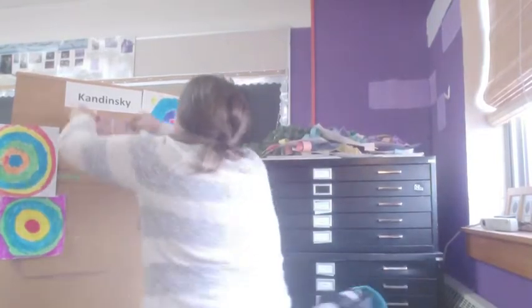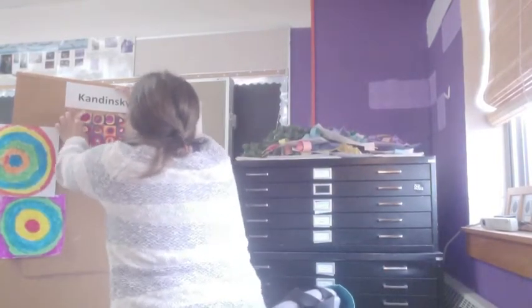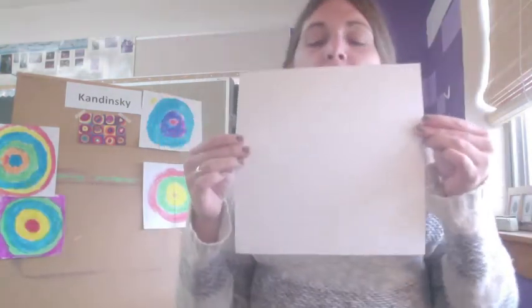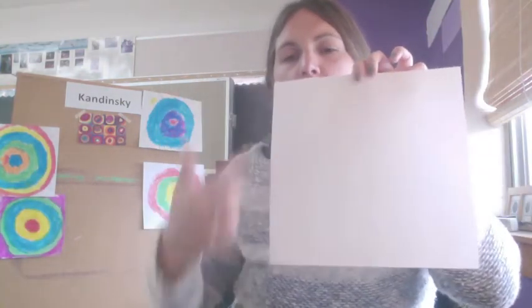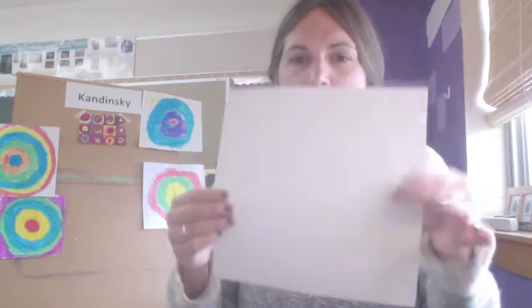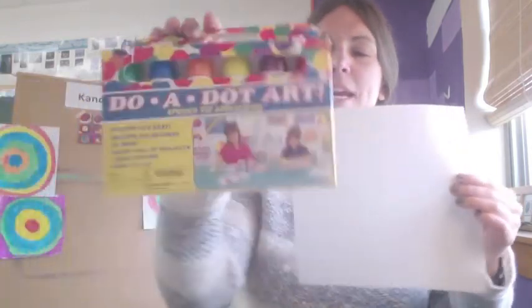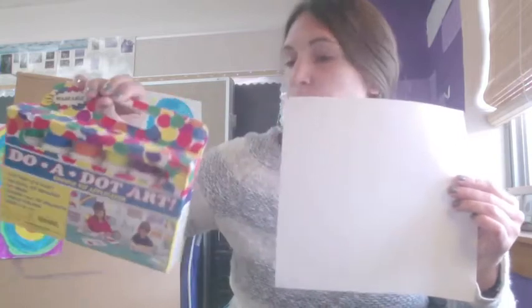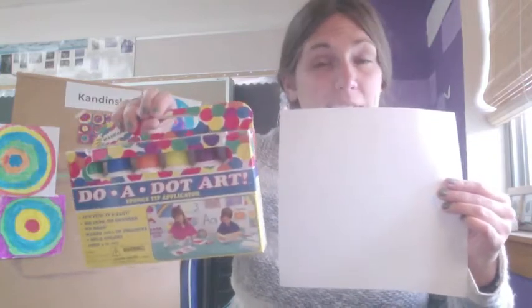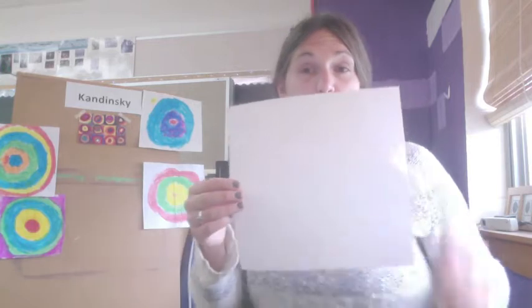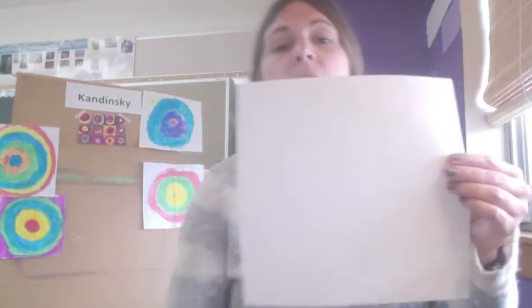For this project you can choose to use paint and a paintbrush — maybe watercolors, tempera paint, acrylic paint, whatever you have at home. You can use markers, colored pencils, anything that you have. You will need a square piece of paper — remember a square means equal on all four sides. For this project I am going to use my bingo dabbers, which were really fun to create the dots, but you can use whatever you'd like.